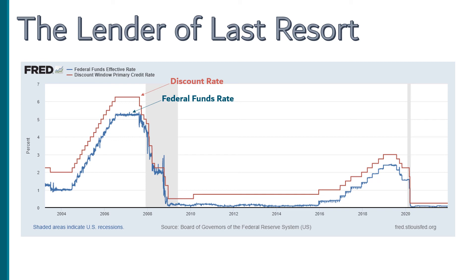To make sure this option is unappealing to banks except in dire circumstances, the Fed sets their discount rate — the interest rate they charge on a loan — higher than the going federal funds rate.